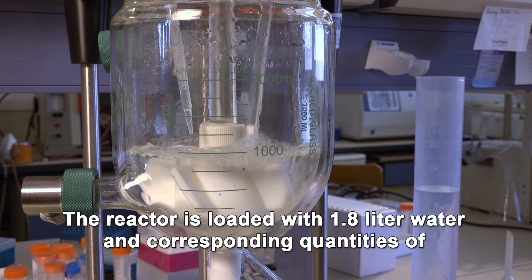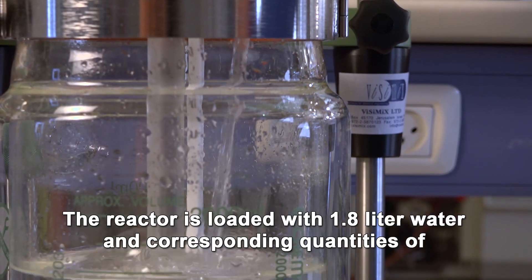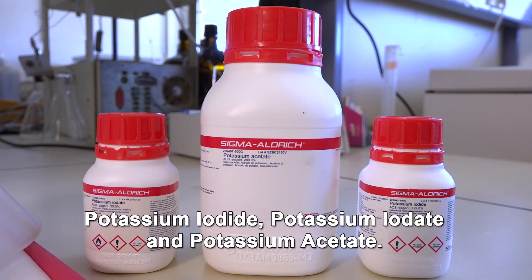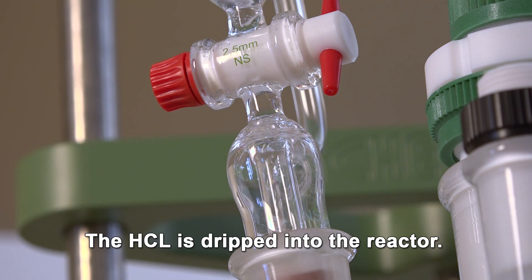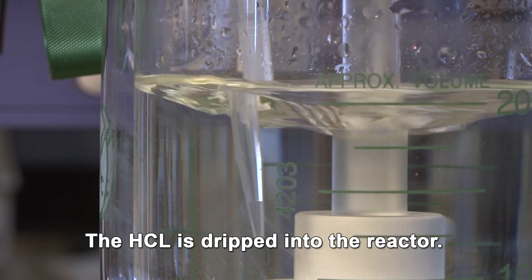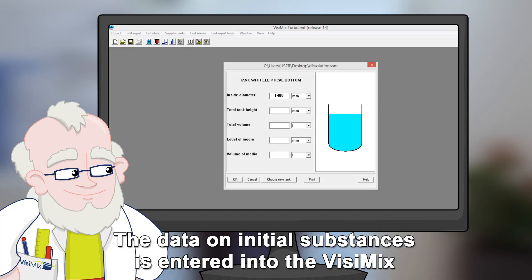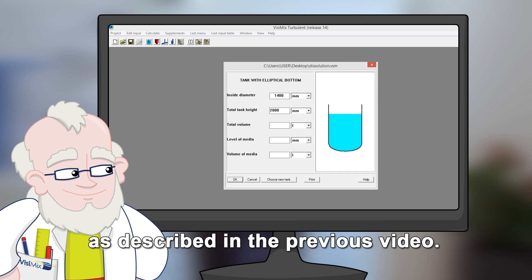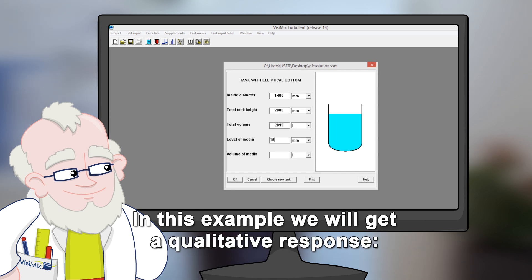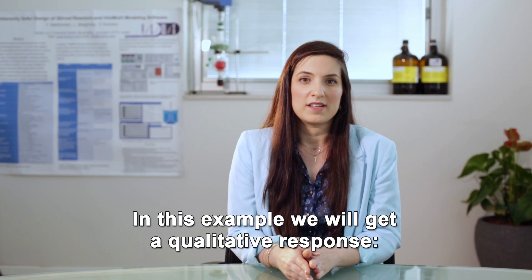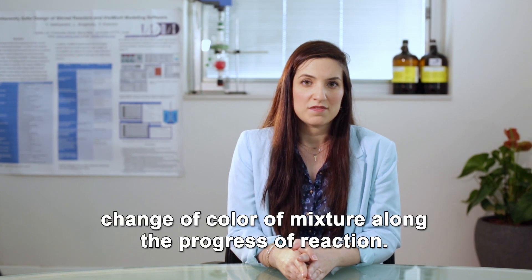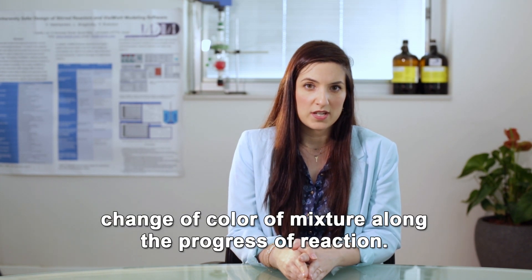The reactor is loaded with 1.8L water and corresponding quantities of potassium iodide, potassium iodate, and potassium acetate. The HCl is dripped into the reactor. The data on initial substances is entered into the Vizimix as described in the previous video. In this example, we will get a qualitative response, change of color of mixture along the progress of reaction.